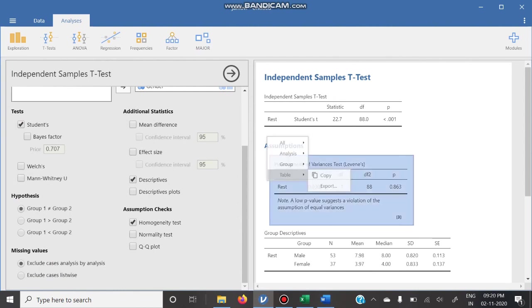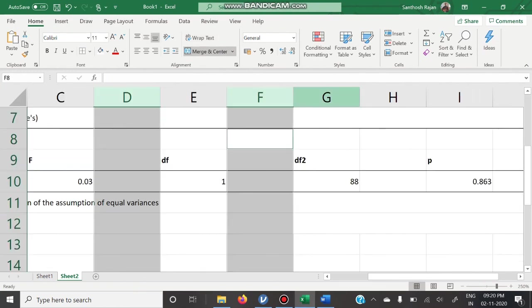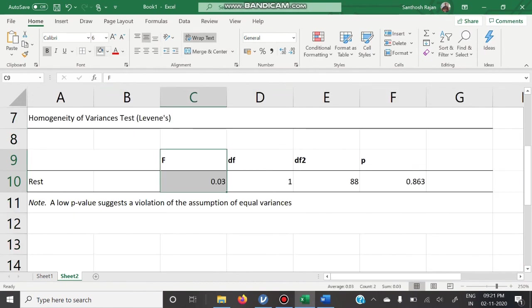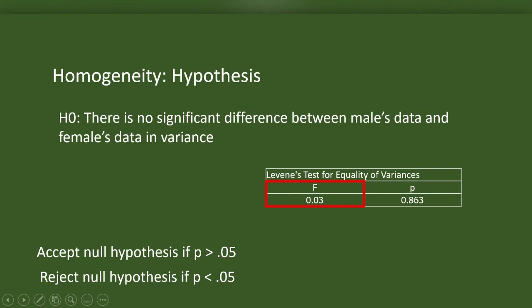I'm copying the table of homogeneity of variance, pasting it in an Excel sheet, removing some of the columns which is not having any information. This is Levene's F. This is p.